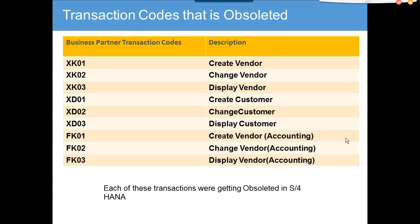XK01, XK02, XK03 — there are some drawbacks because the BP screen is a little complex. We will show you in detail how to use display transaction codes that will help you in the long run, similar to XD01, XD02, FK01, FK02, and FK03. So this covers everything related to the transaction codes.